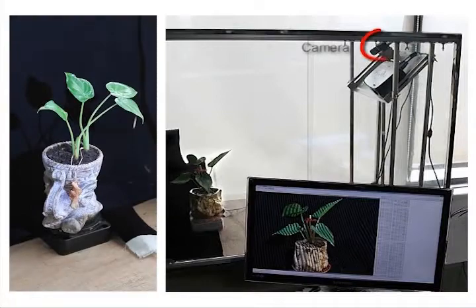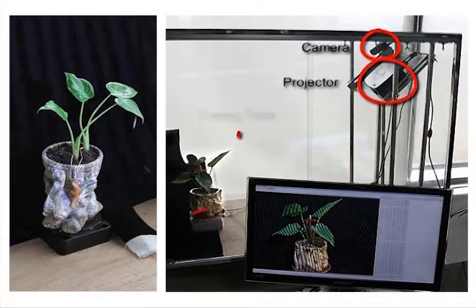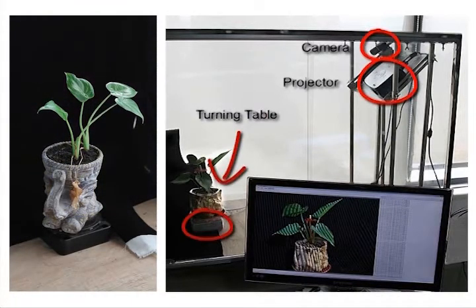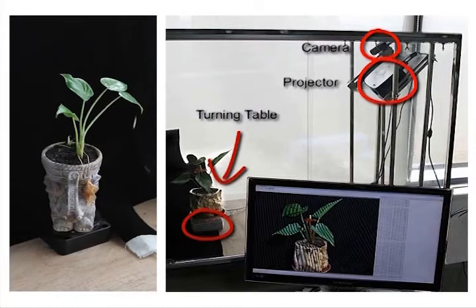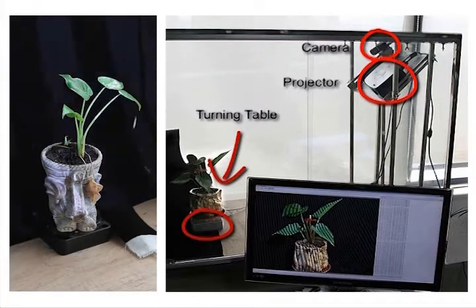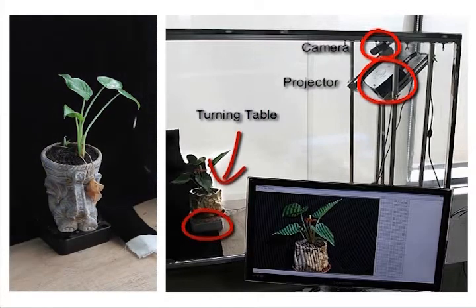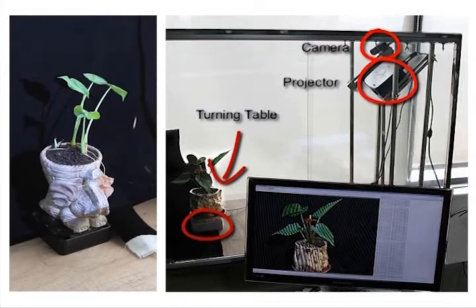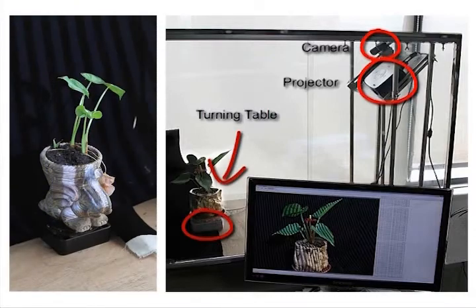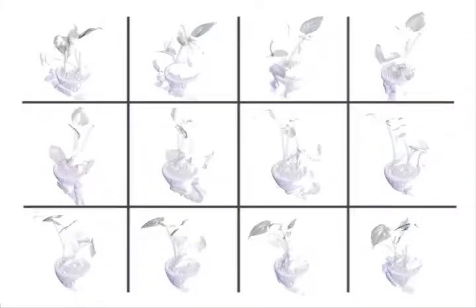Our acquisition is based on structured light technology that consists of a camera-projector pair and a turning table on which the plant is set. The structured light scanner captures the geometry of the plant from a specific view. The turntable rotates for 30 degrees each time and pauses for scanning. So a full-cycle scan is made of 12 single-view scans that are registered together to make one frame of the 4D point cloud.